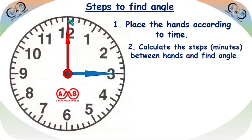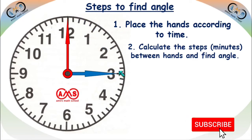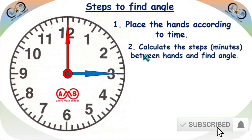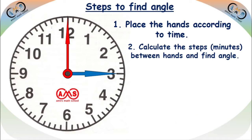Here, between this minute hand and the hour hand, there are 1, 2, 3, 4, 5 ... 15 steps — that is 15 minutes between the two. Step 2 is to calculate these steps. Here, 15 steps, and each step is 6 degrees. So the total angle is 15 times 6, which is 90 degrees.